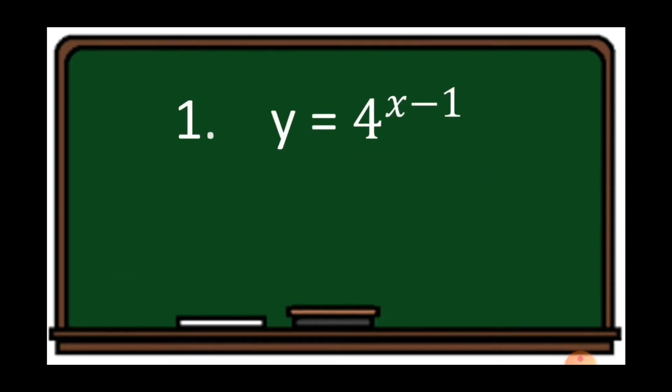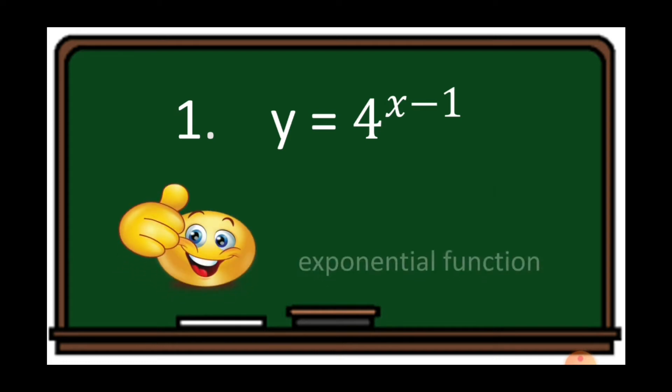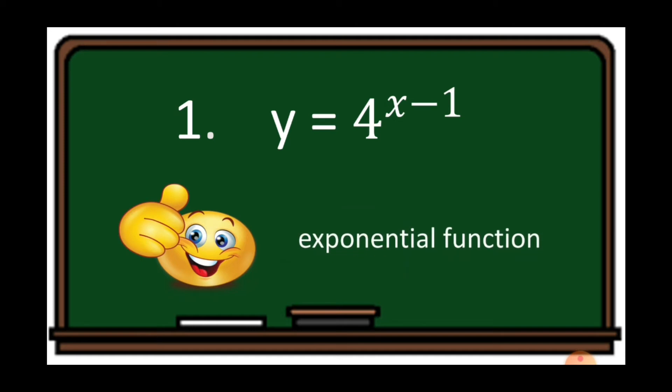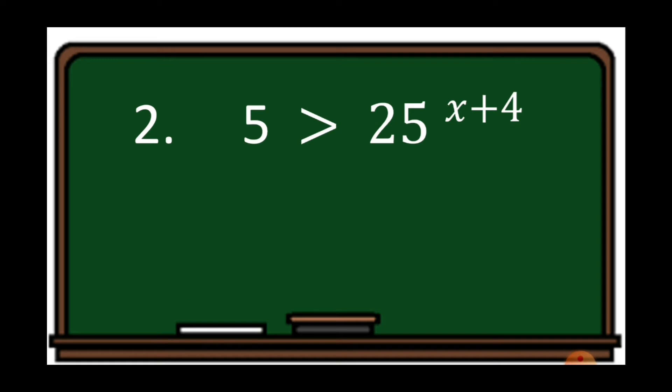Let's start. Number 1: Y is equal to 4 raised to (X minus 1). Thumbs up because the answer is an exponential function. Remember that Y is a function of X. Number 2: 5 is greater than 25 raised to (X plus 4).